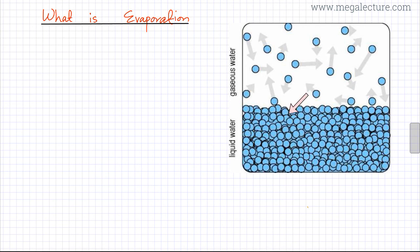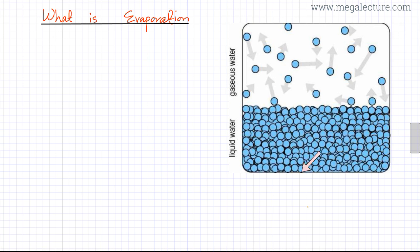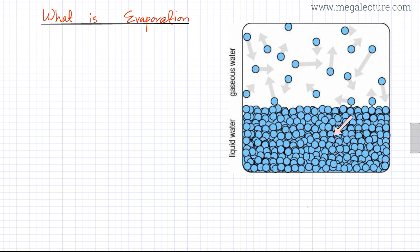I have liquid water particles over here. In liquid state, these particles are slipping and sliding past each other. They are energetic, but not energetic enough to overcome the intermolecular forces that are attracting the particles together. The particles are sticking to each other but randomly moving about, slipping and sliding past each other, but not moving freely in all directions. The forces of attraction between the particles are still very strong.